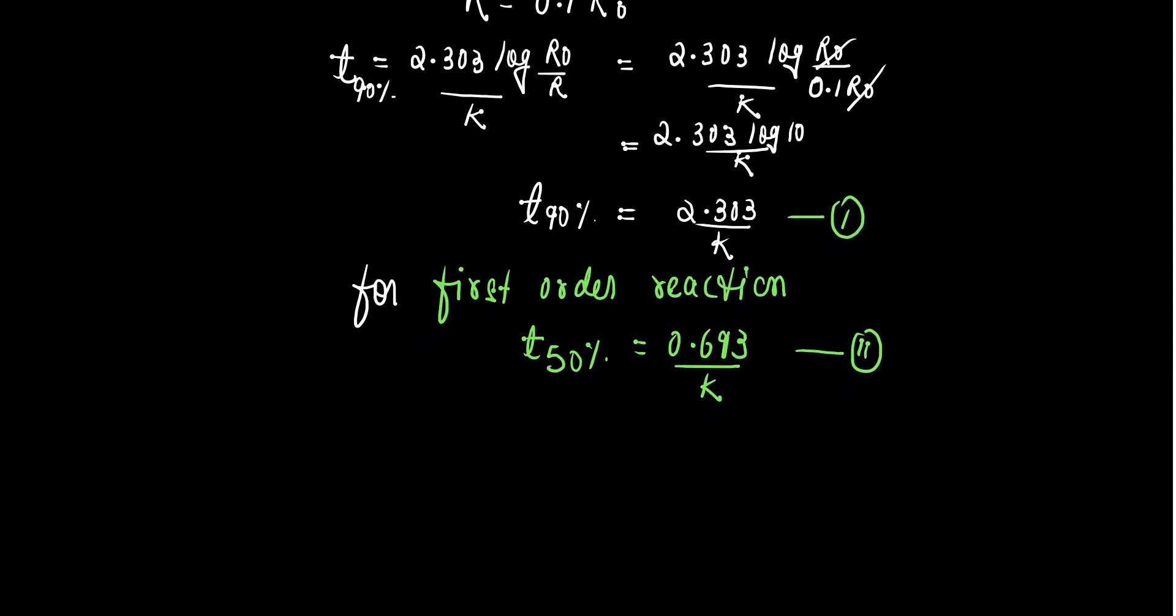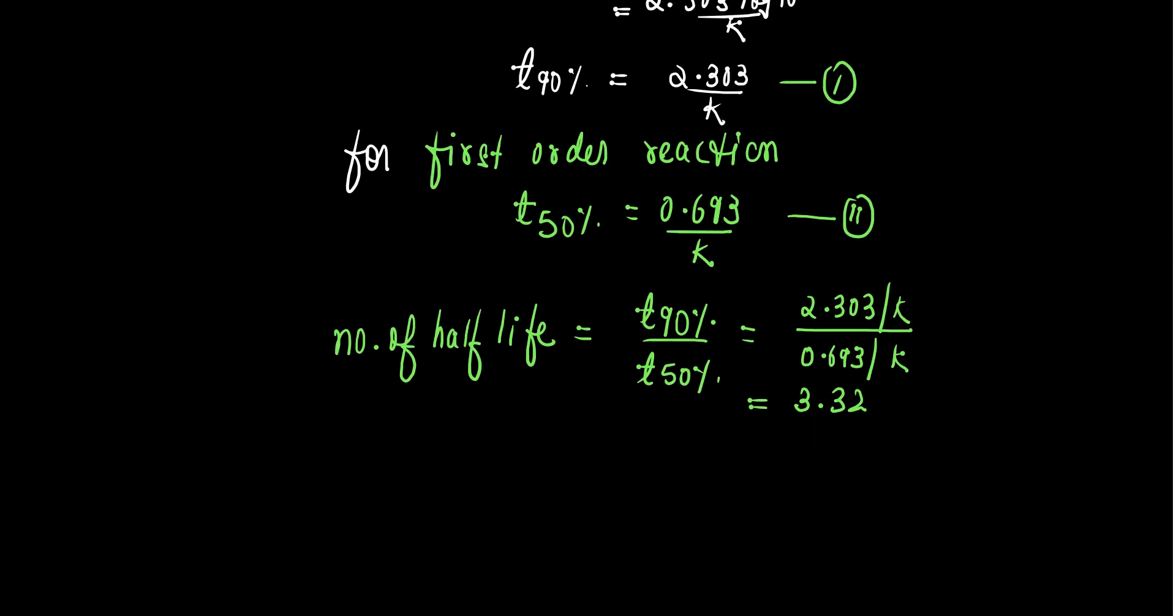Number of half life will be equal to T 90% divided by T 50%. That would give us 2.303 upon K divided by 0.693 upon K which will be equal to 3.32. That means, 3.32 half-lives will be needed for 90% completion of a first order reaction.